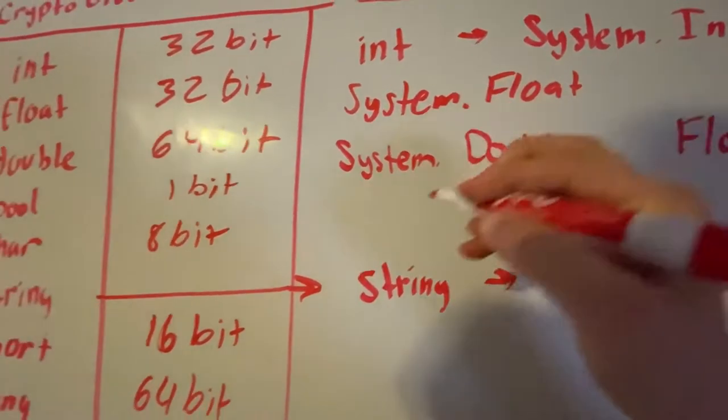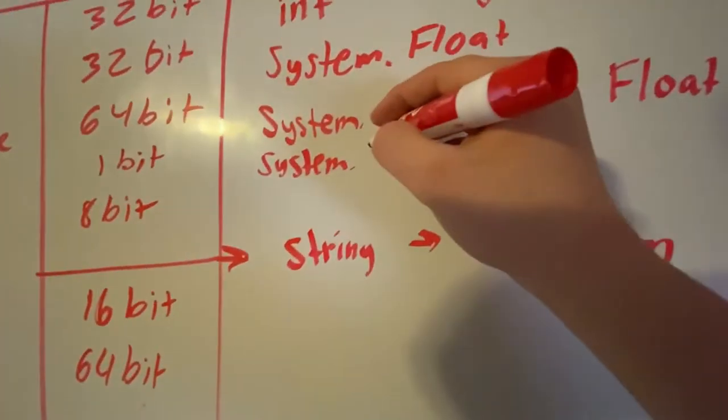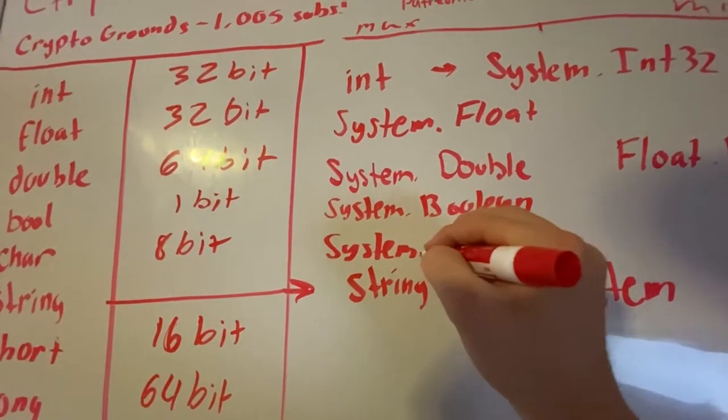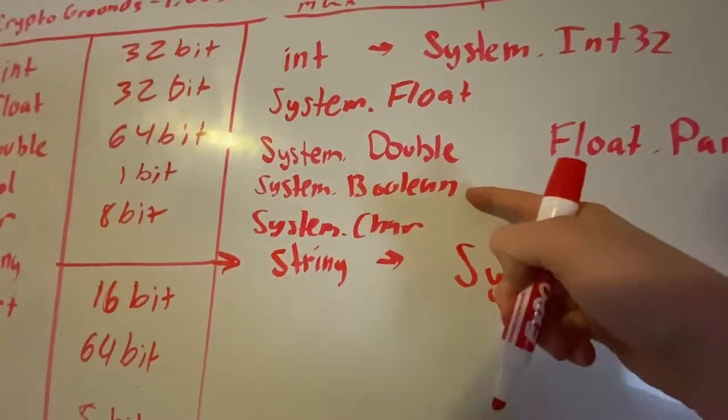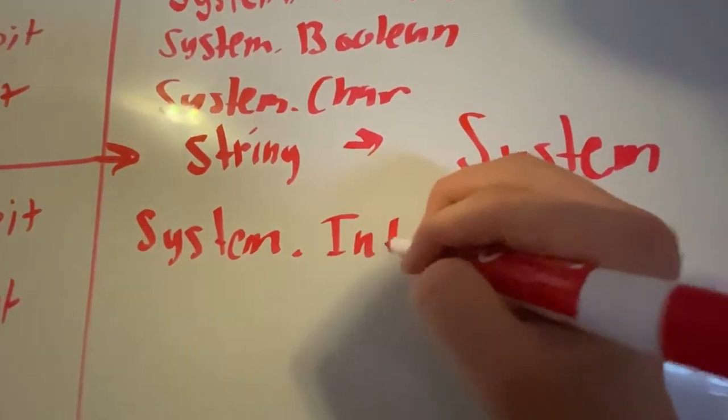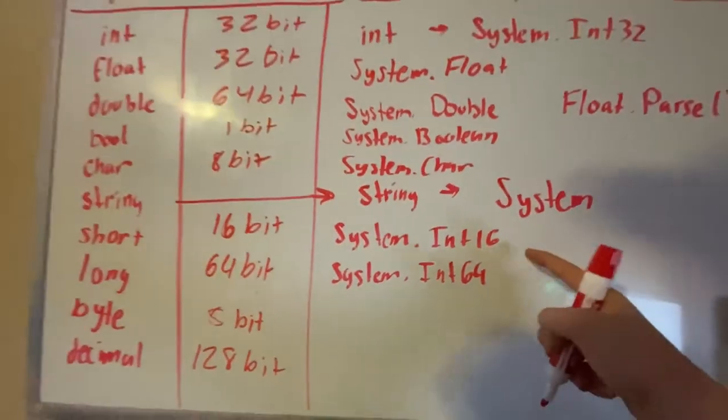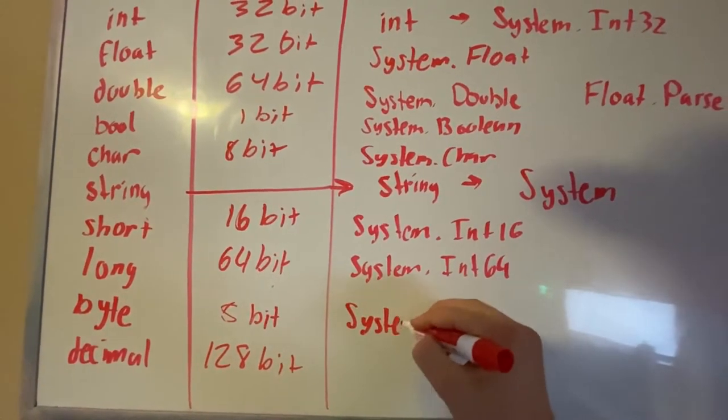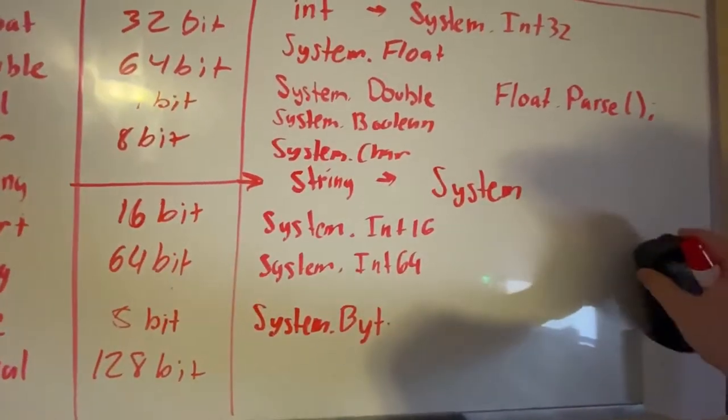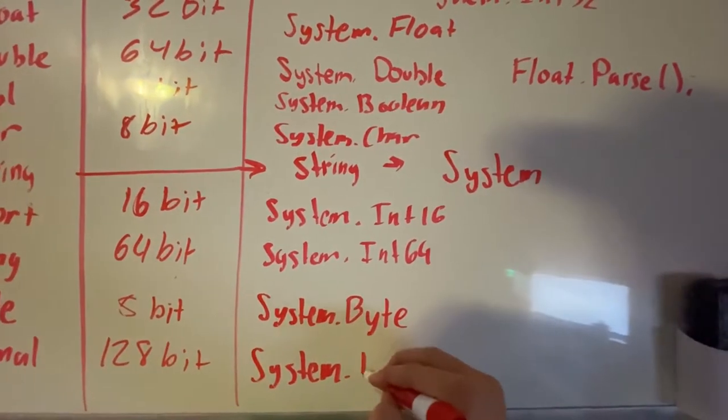I think this is System.Boolean, yeah it is. We got System.Char. These are easy memorized by the capitalization, some of them like Boolean is different. We have System.Int16 for short, System.Int64 for long, and byte is System.Byte. There's also System.Decimal.